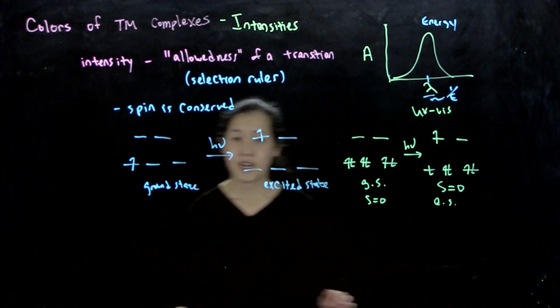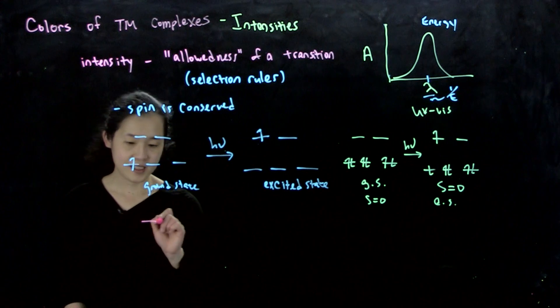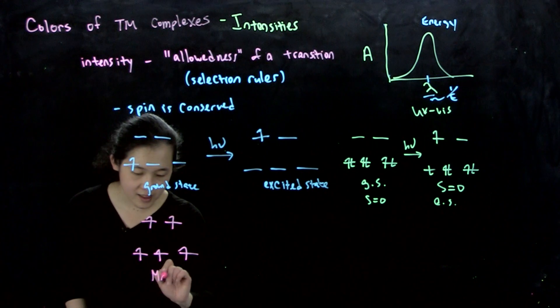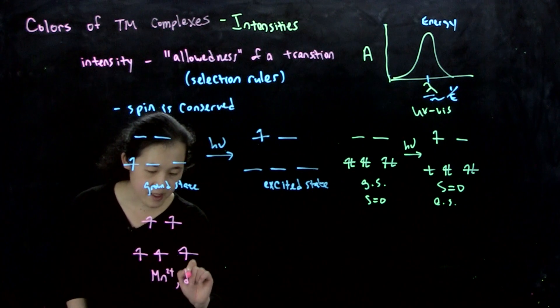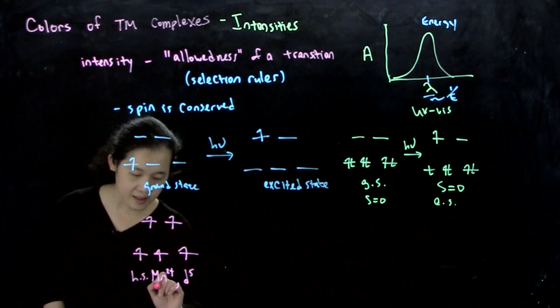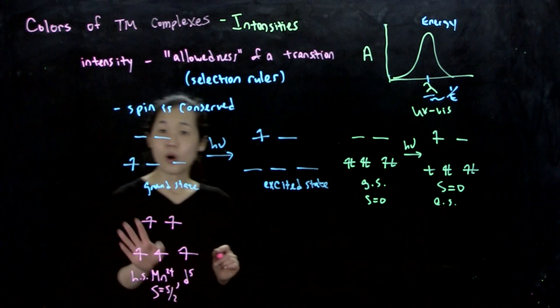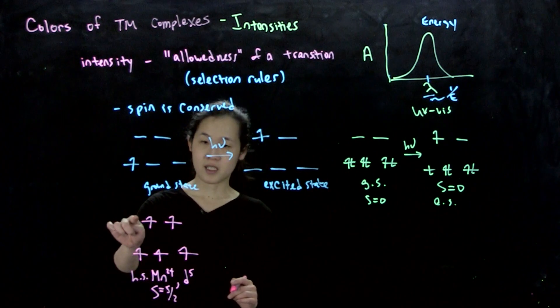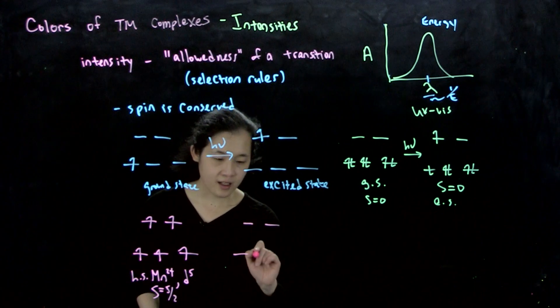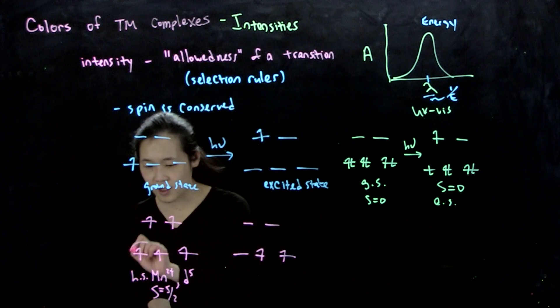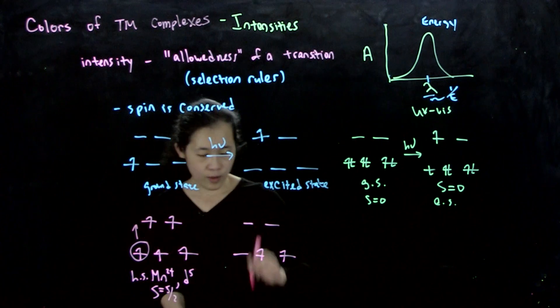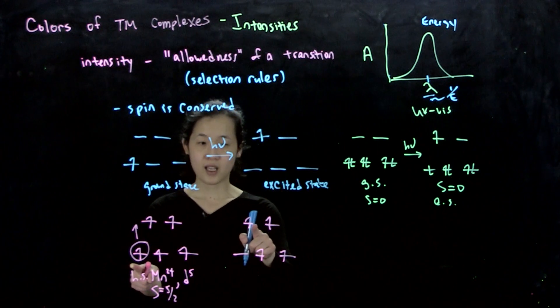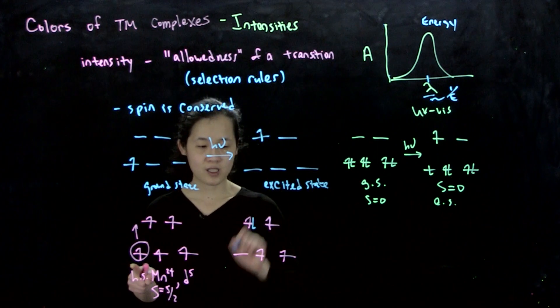But one upshot is that if you have, let's say, manganese 2 plus, high spin d5, s equals five halves, there is no way to excite an electron from this d orbital in the t2g up to here. So suppose that we did that. If we took this electron, moved it up here, we would have to end up doing what's called a spin flip. So this electron can't be in the same orbital and be spin up. So we have to do a spin flip.